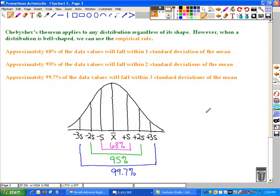We said that Chebyshev's theorem applies to any distribution regardless of its shape. However, if we happen to have a bell-shaped or symmetrical or normal distribution curve, which we'll talk about much later in the year, then we can use empirical rules. So this one is introduced here.